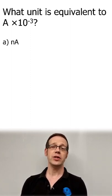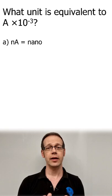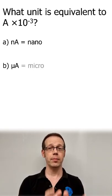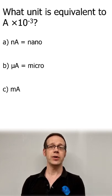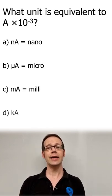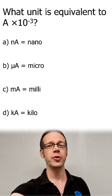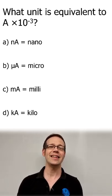The options are A, nA which is nanoamps; B, that weird backwards Y thing which is actually the Greek letter mu and in this case means microamps; C, mA which is milliamps; or D, kA which is kiloamps. So remember these are the multiples and submultiples that we can use to make numbers easier to physically write down.